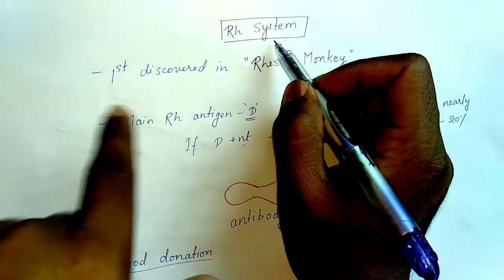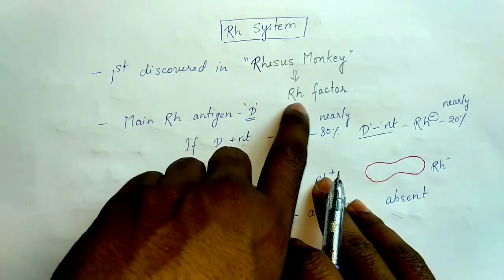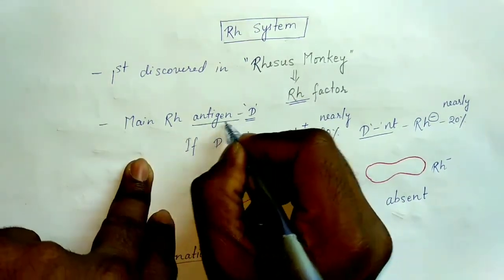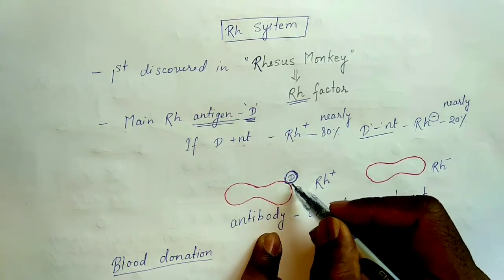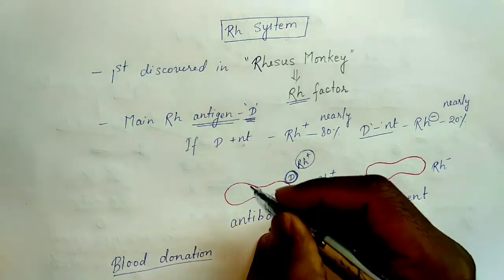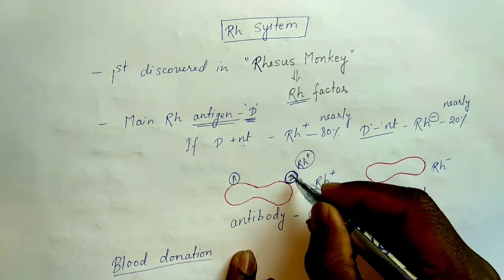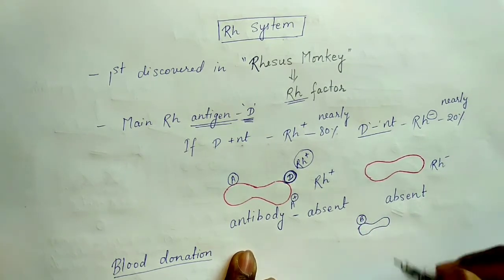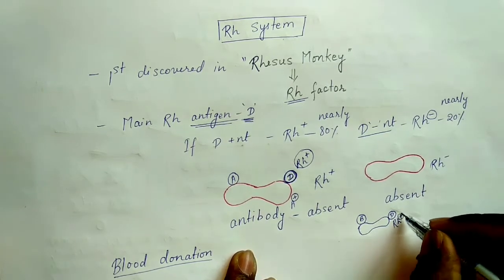Now we will see about the Rh system. There are two blood group systems to study: the first was ABO and now this is Rh. It was first discovered in rhesus monkeys, so its name comes from there. There are many antigens in Rh factor, but the main one to study is antigen D. If D antigen is present in the RBC, the person is Rh positive. For example, if someone has blood group A and also has D antigen, that person is A positive.